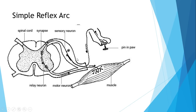This is what we call a reflex action. You need to be able to draw the simple reflex arc. Just understand that there are three components: you've got the sensory neurons, which get connected to a relay neuron, which then gets connected to a motor neuron. All these connections happen within the spinal cord.